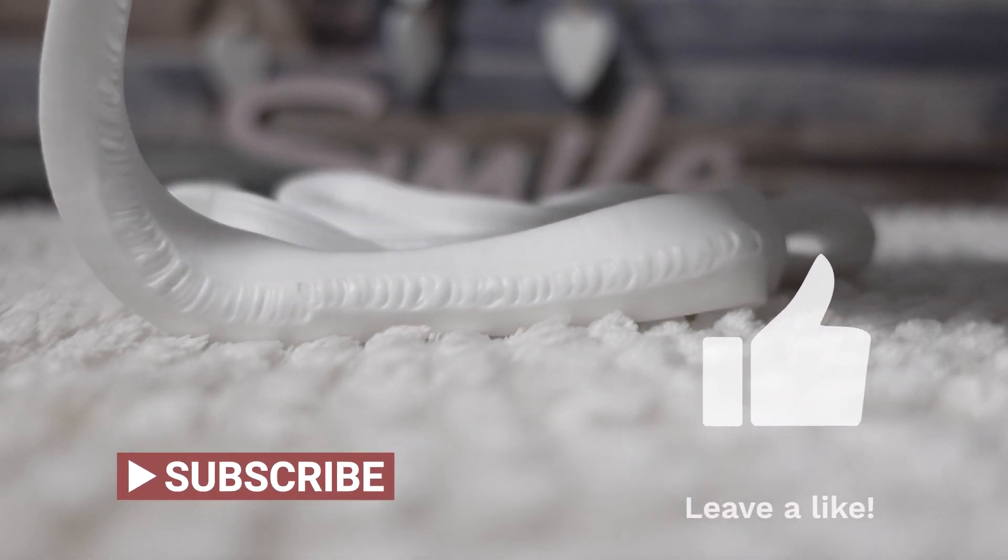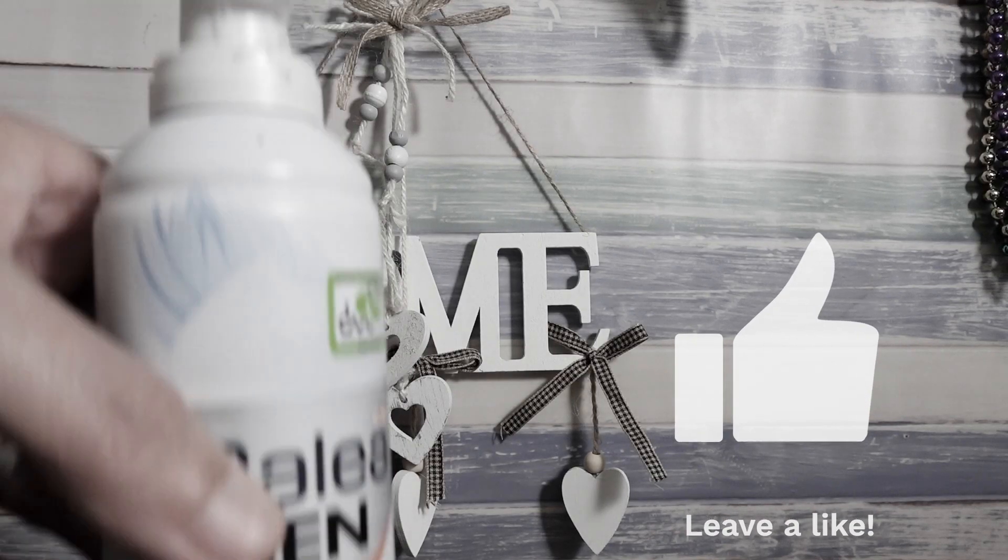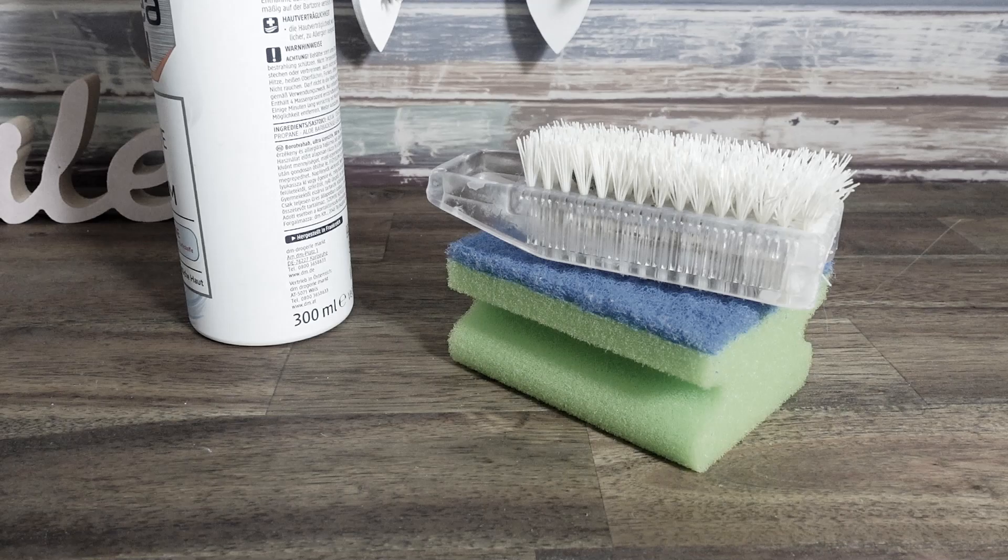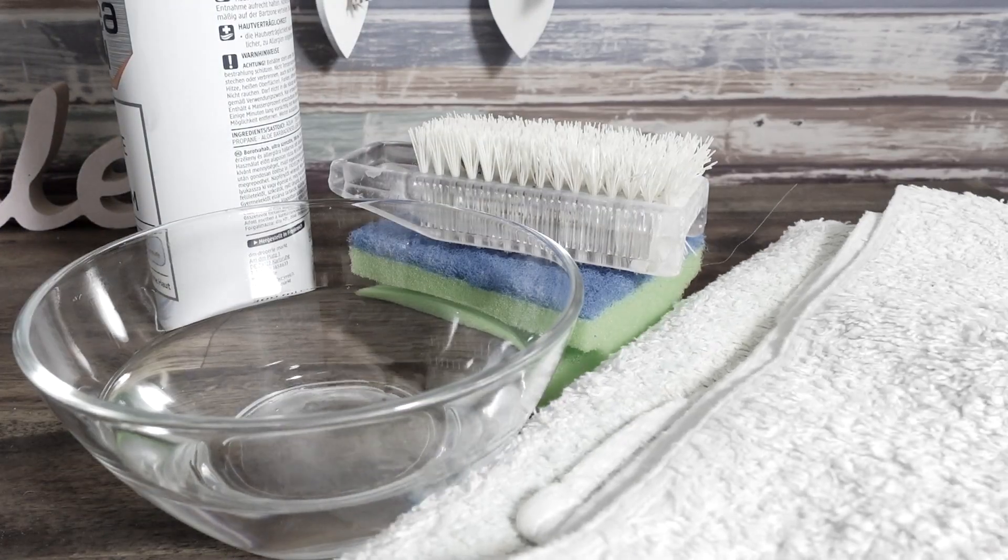To use shaving cream to clean your carpet, you will need shaving cream, a sponge or soft brush, a bowl of warm water, and a towel.